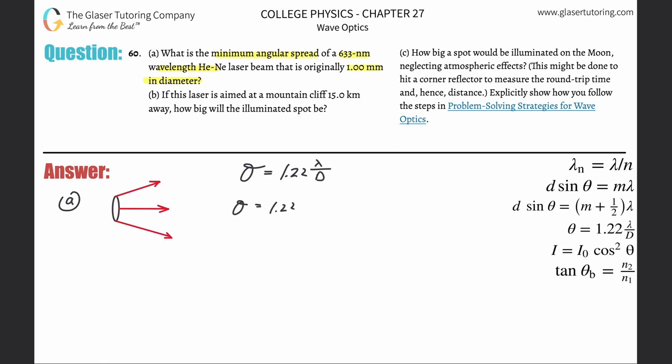So 1.22 multiplied by the wavelength, which is 633 nanometers, but let's convert that into meters, multiply by 10 to the minus ninth, and then divide that all by that diameter of one millimeter, but convert it into meters. So now it's 1.22 times 633 times 10 to the minus ninth divided by 1 times 10 to the minus 3. So this is 7.72 times 10 to the minus fourth radians.